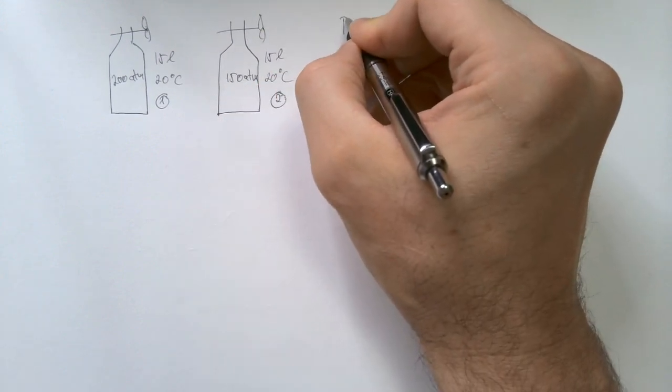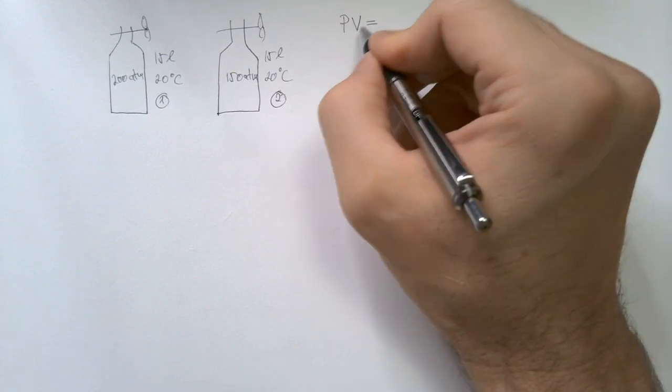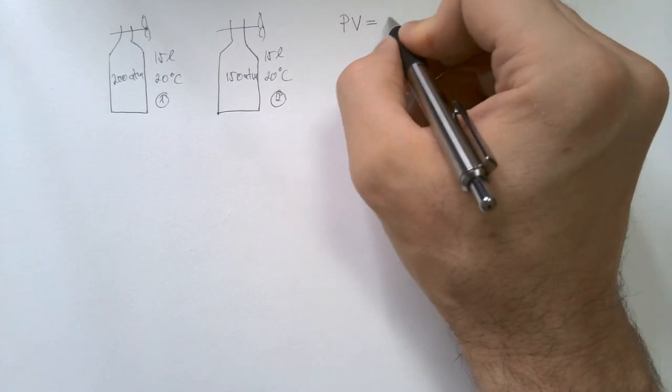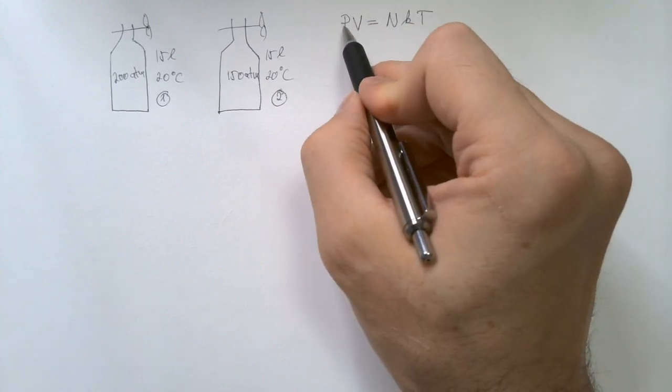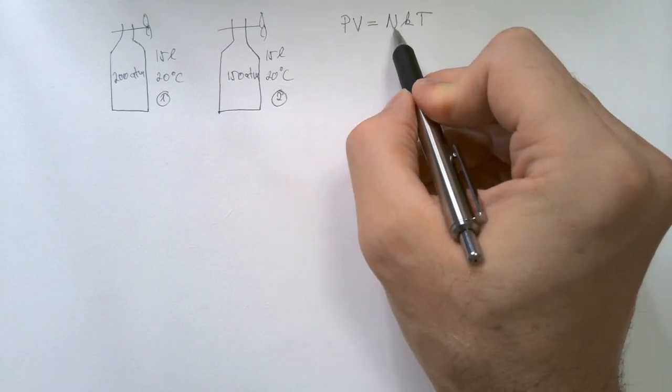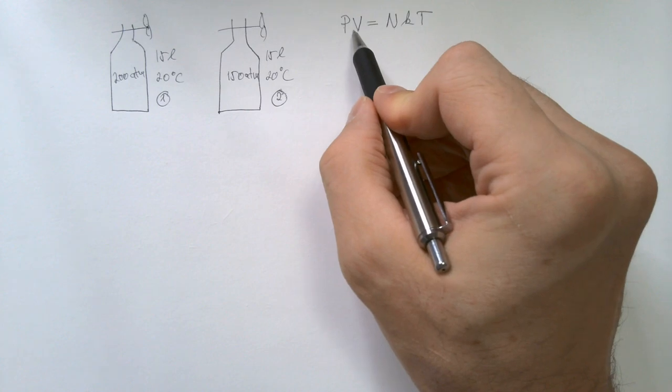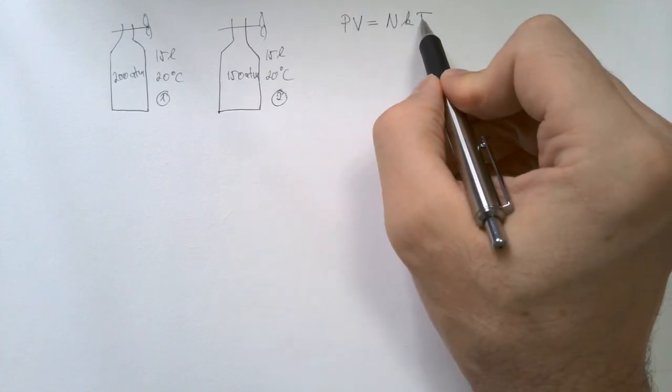We started last time with the equation of state for an ideal gas in the form PV is equal NKT, where P is pressure in Pascals, V is volume in cubic meters, N is number of atoms in this volume V, K is Boltzmann constant, and T is absolute temperature.